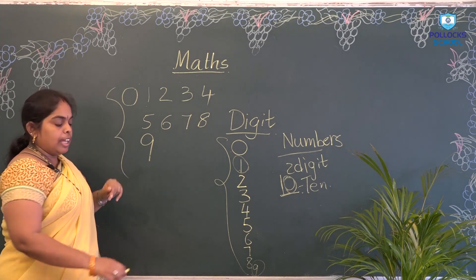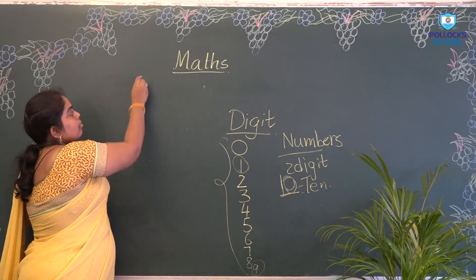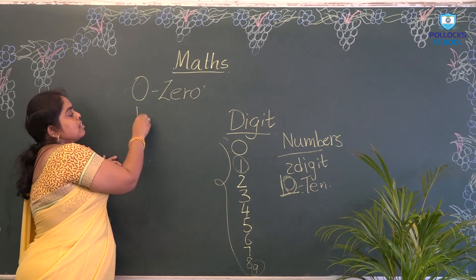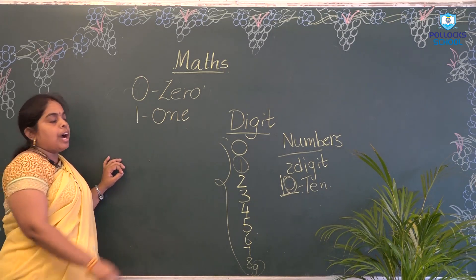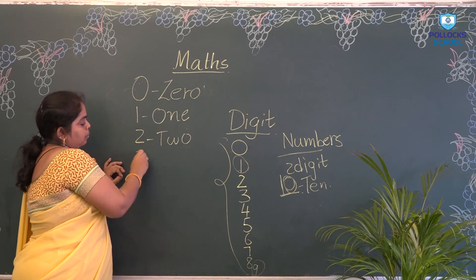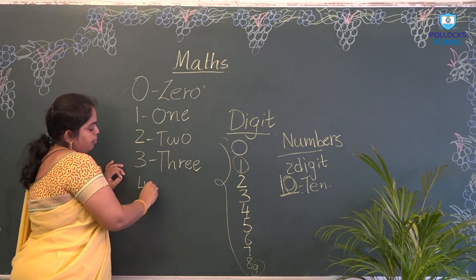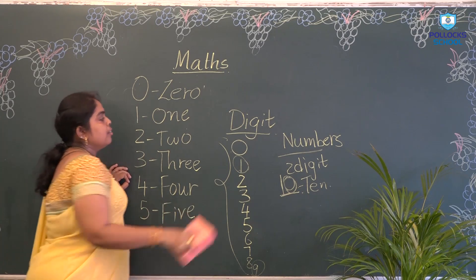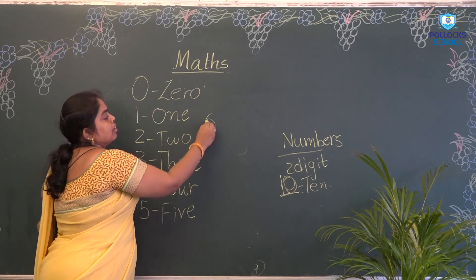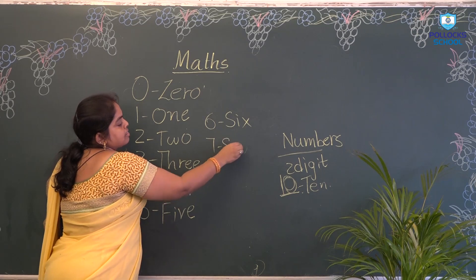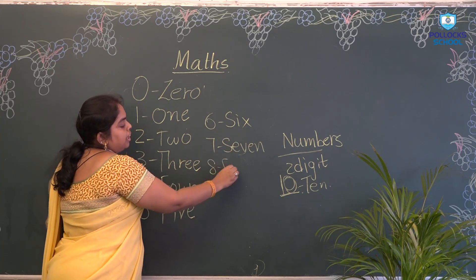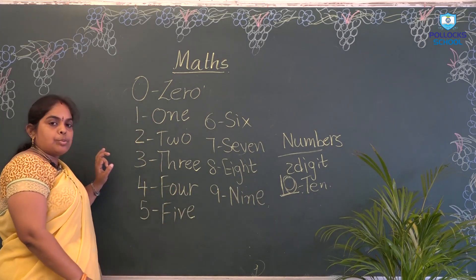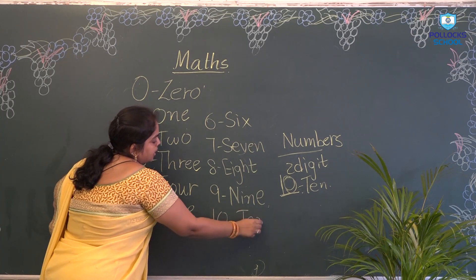Now we will learn the names of these numbers. This is 0 — Z-E-R-O. This is 1 — O-N-E. 2 — T-W-O. 3 — T-H-R-E-E. 4 — F-O-U-R. 5 — F-I-V-E. 6 — S-I-X. 7 — S-E-V-E-N. 8 — E-I-G-H-T. 9 — N-I-N-E. The 2-digit one is named 10 — T-E-N.